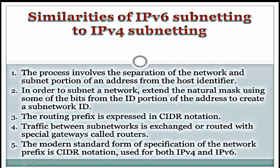Now let me explain the similarities of IPv6 subnetting to IPv4 subnetting. As we already saw, we can get a lot of subnets from an IPv6 address. The similarities are: first, the process involves separating the network and subnet portion of an address from the host identifier. Second, to subnet a network, extend the natural mask using bits from the ID portion to create a subnetwork ID. Third, the routing prefix is expressed in CIDR notation. Fourth, traffic between subnetworks is exchanged via special gateways called routers. Fifth, the modern standard for specifying the network prefix is CIDR notation, used for both IPv4 and IPv6 networks.